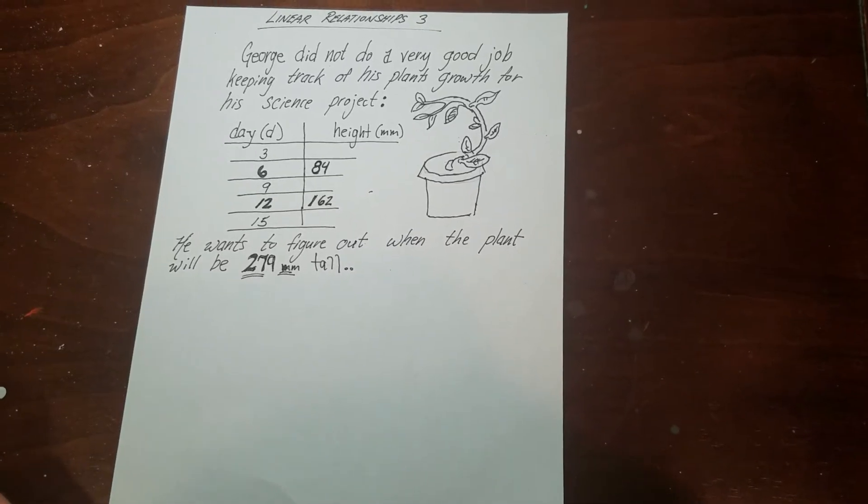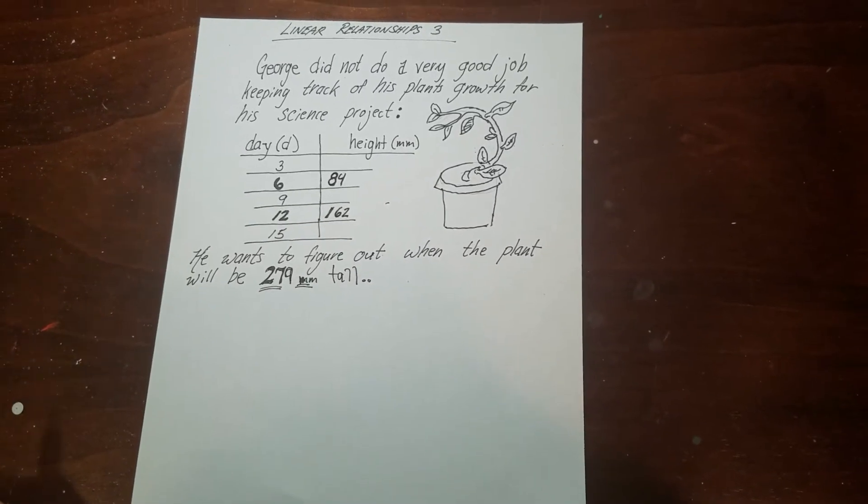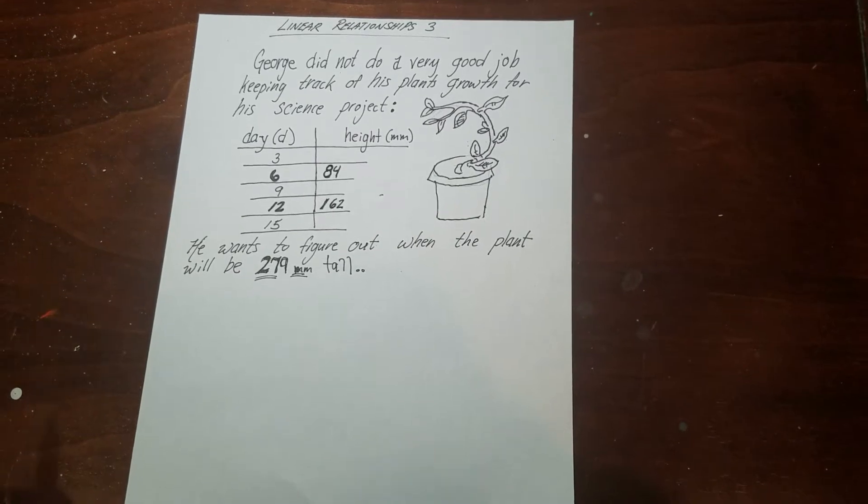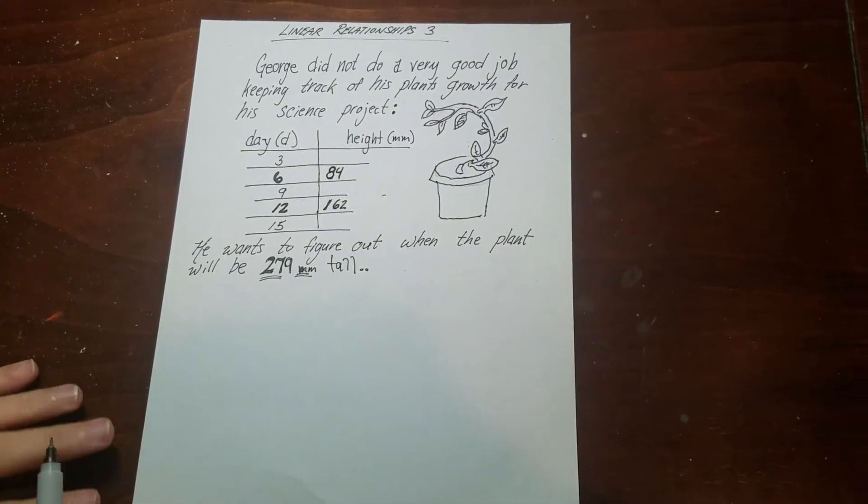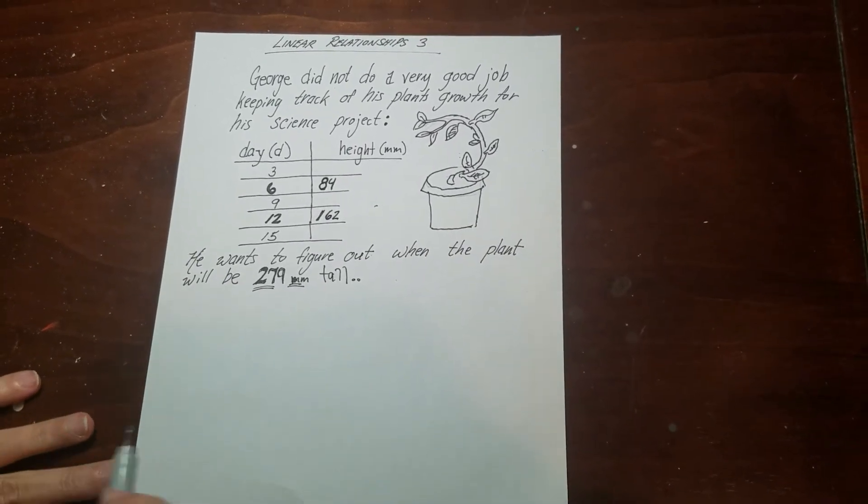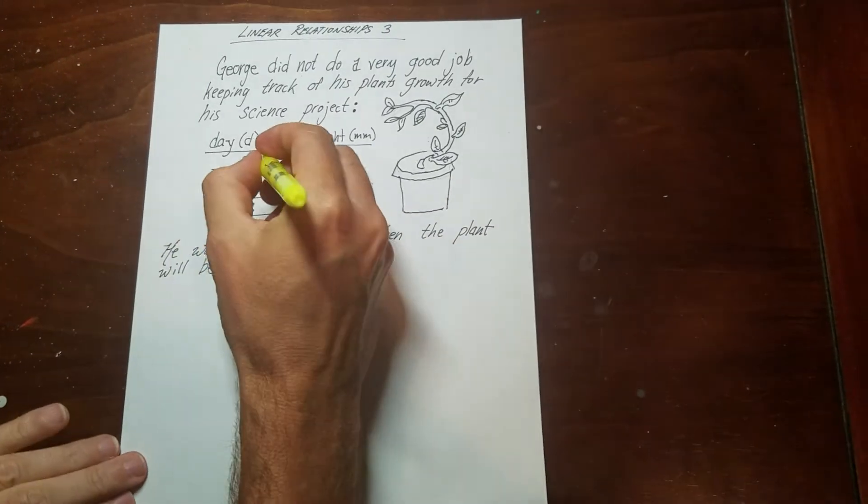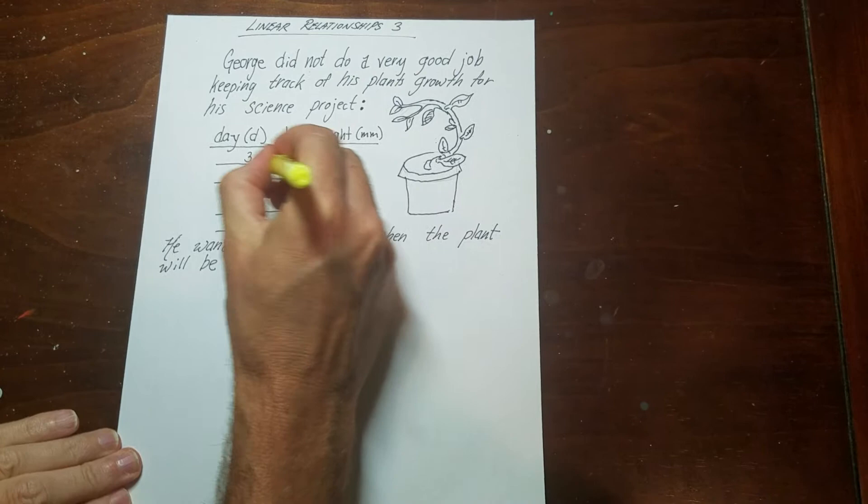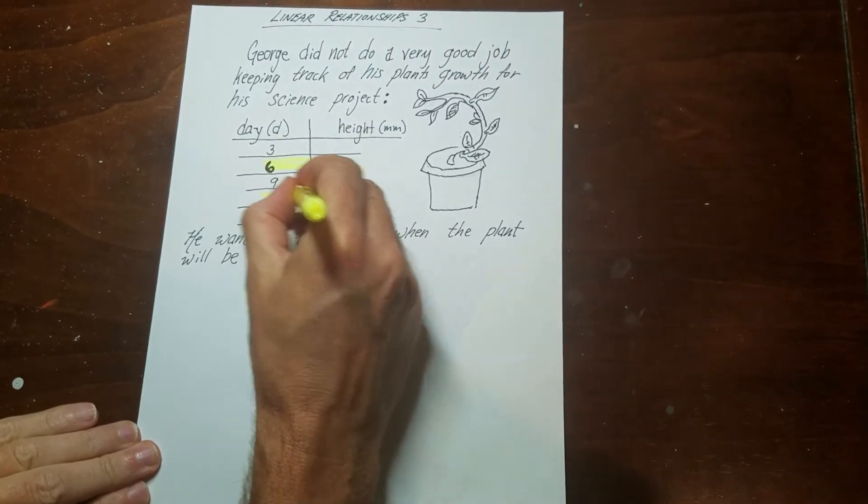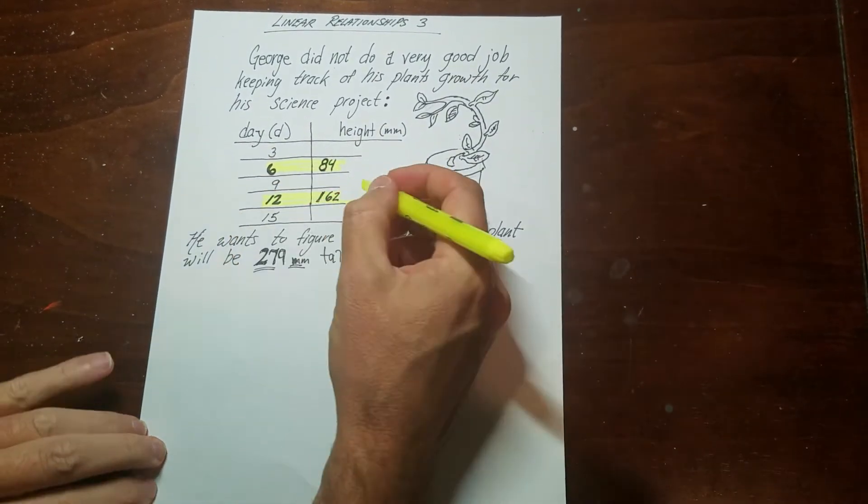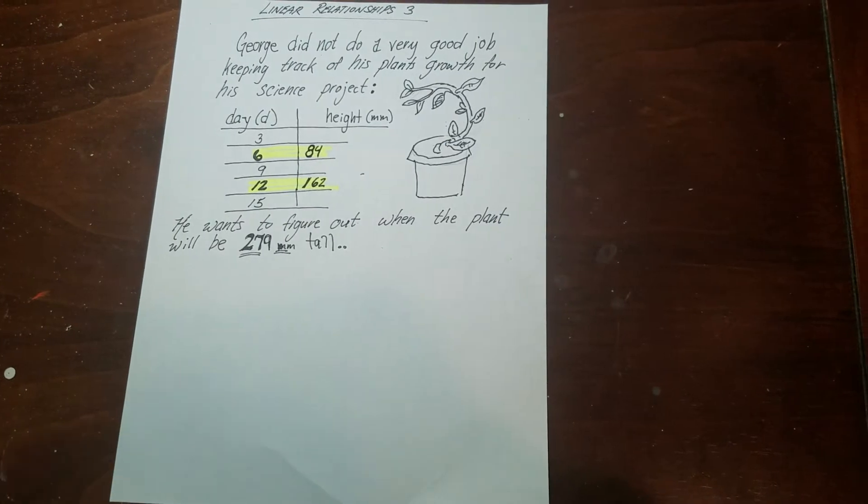So what we're going to do is we're going to find a rule if you only have two points using this word problem. So I guess this guy had a science project and he didn't do a very good job recording the data. So if we look at his table, he only wrote down how big the plant was on day six and he wrote down how big the plant was on day twelve, but he didn't fill in the rest of it.